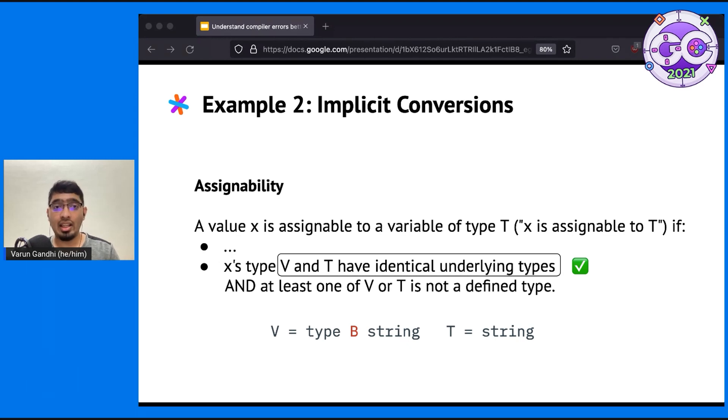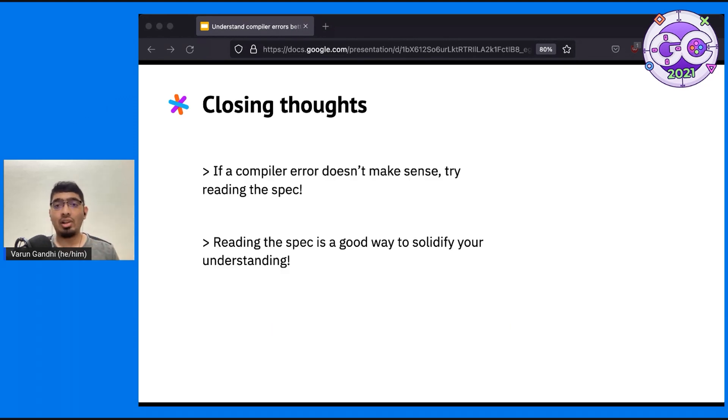Let's look at the second example. The underlying type of B is string, and string's underlying type is itself. So, again, the first condition is satisfied. However, according to the spec, both B and string are defined types. So, the second condition is not satisfied. And that's why we got that compiler error.